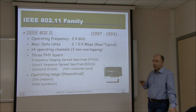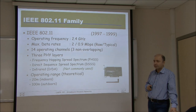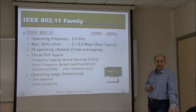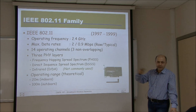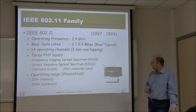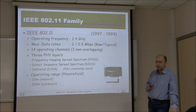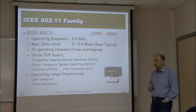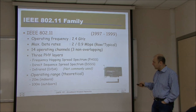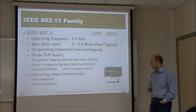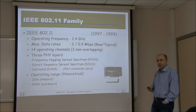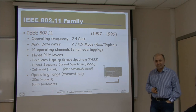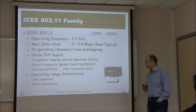In the initial 802.11 standard, three physical layers were defined: frequency hopping spread spectrum (FHSS), where each node hops across channels in a different sequence — also the technology used in Bluetooth; direct sequence spread spectrum (DSSS); and infrared direct access (IrDA). IrDA is not commonly used; mostly used were FHSS and DSSS. These are old legacy systems — very difficult to find today — but it's important to know they existed.